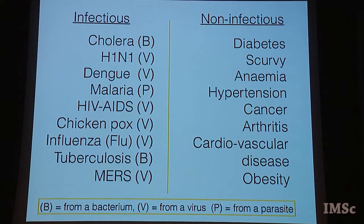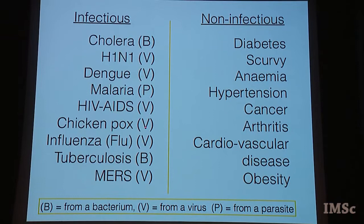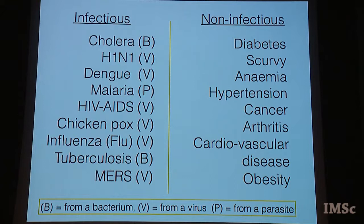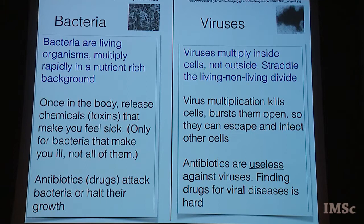Here's a list: Cholera is bacterial, H1N1 is viral, Dengue is viral, Malaria is a parasite, HIV/AIDS is a virus, Chickenpox is a virus, Influenza is a virus, Tuberculosis is a bacterium, MERS is a virus. On the non-infectious side: diabetes, anemia, hypertension, certain cancers, arthritis, cardiovascular disease, obesity, etc. Mentally you should have this division into two classes — infectious and non-infectious — with the infectious ones carried by a bacterium, a virus, or a parasite.